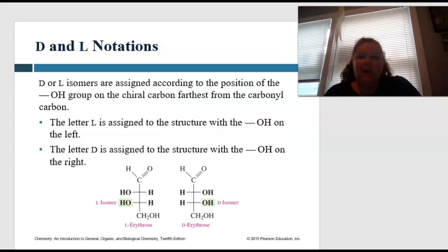So you have your D and L notations. The D or L isomers, like we saw in the previous picture, are assigned according to the position of the OH group on the chiral carbon, furthest from the carbonyl group. So the letter L is assigned with the structure with the OH on the left. So that one works pretty good, L, left.